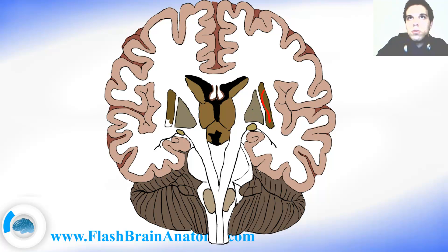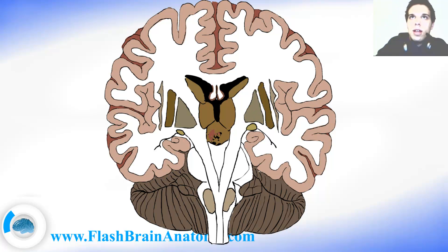The pallidum can also be divided into the medial pallidum and the lateral pallidum. Then we also have the claustrum, and the white matter between the claustrum and the putamen is called the extreme capsule. The white matter between the putamen and the pallidum is called the external capsule. And, as I said, this was the optic tract.